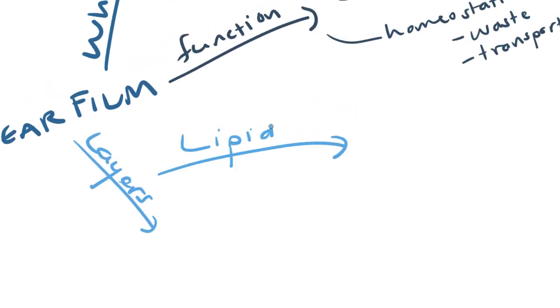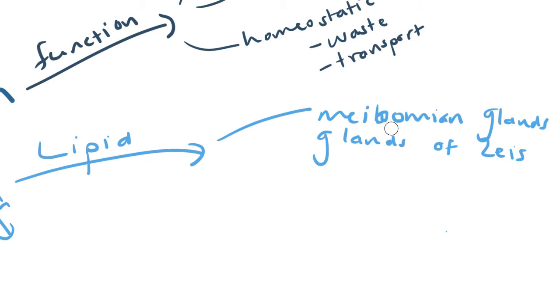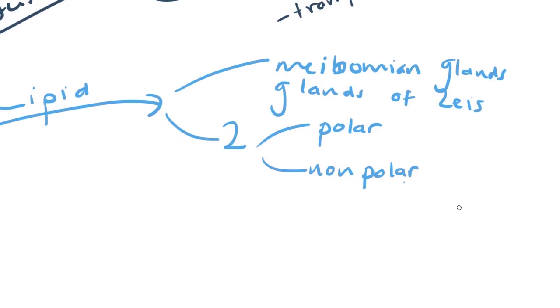Now, the lipid layer is predominantly secreted from the meibomian glands and also from the glands of Zeiss. These two types of glands are found at the edge of the lids. The lipid layer contains two different types of lipids. So there's two types: we have polar and we have non-polar. And the reason that this is important is because it's involved in a very specific function of the lipid layer.